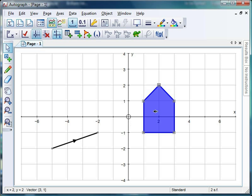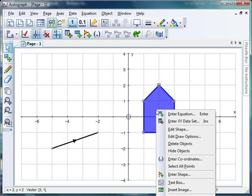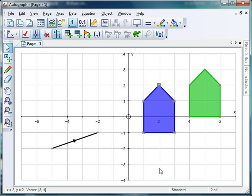So that object's selected, that vector's selected. And if I right click now, I should get the option to translate. Click on that and there it is.